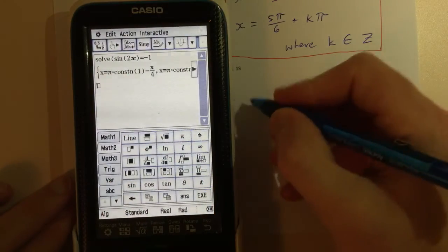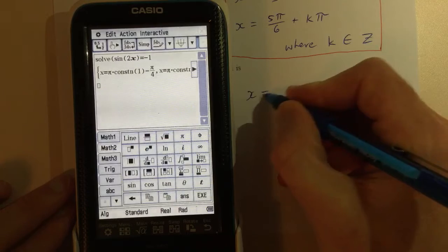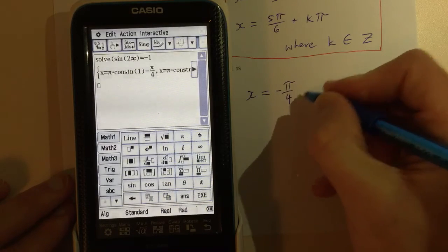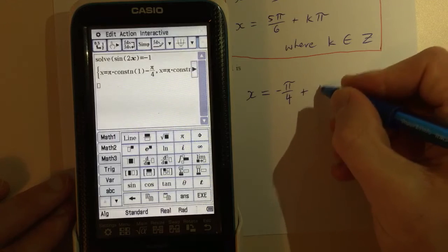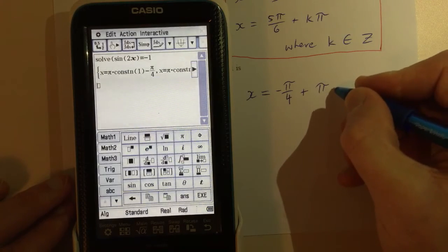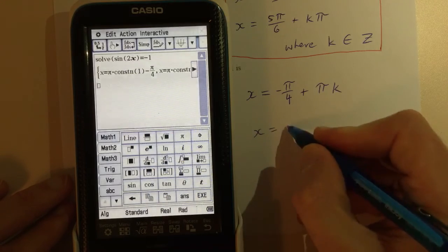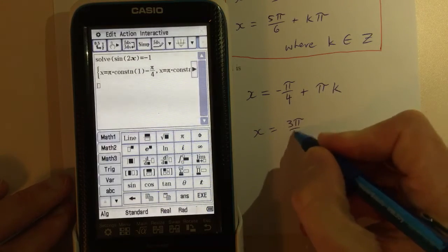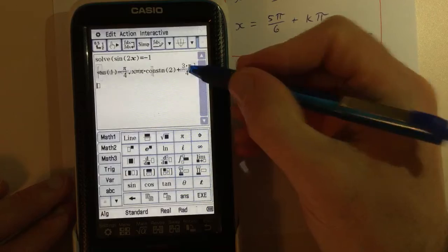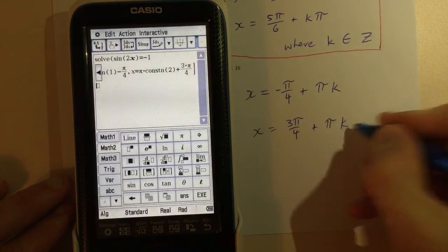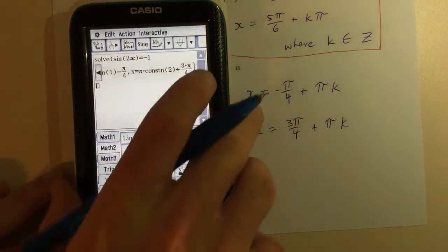So if we write both of those down, so from the CAS we have, well I'm going to write the negative π/4 first, so -π/4 + πk, and the other solution was x = 3π/4 + πk. So I've got my solutions from the calculator.